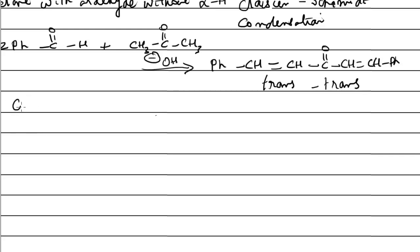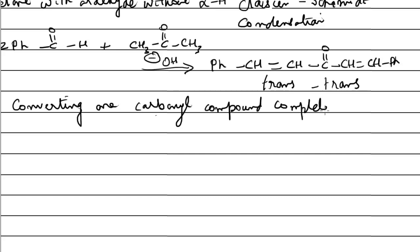Another way to carry out a cross-aldol with more effectiveness is by converting one carbonyl compound completely into the carbanion. This can be achieved not by using hydroxide — which is a relatively weak base — but by using LDA, lithium diisopropyl amide. This essentially converts one particular carbonyl compound entirely into the carbanion, so we are able to get one product effectively.